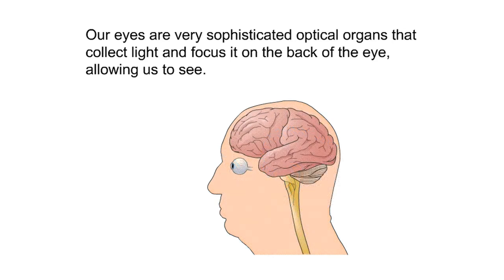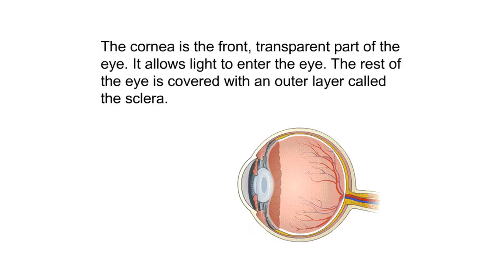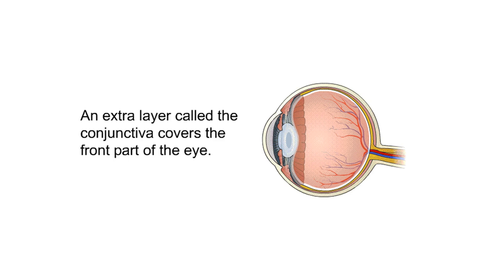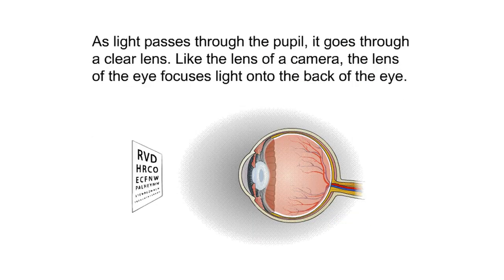Our eyes are very sophisticated optical organs that collect light and focus it on the back of the eye, allowing us to see. The cornea is the front transparent part of the eye — it allows light to enter. The rest of the eye is covered with an outer layer called the sclera, and an extra layer called the conjunctiva covers the front part. Light hits the iris, the colored part of the eye. The opening in the middle of the iris is called the pupil, which controls the amount of light entering by changing size. As light passes through the pupil, it goes through a clear lens that focuses light onto the back of the eye.